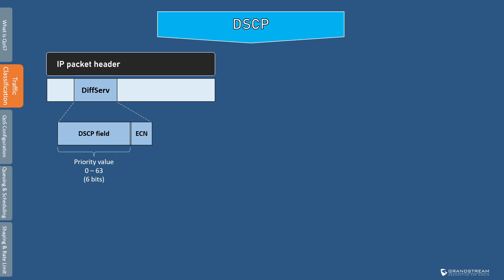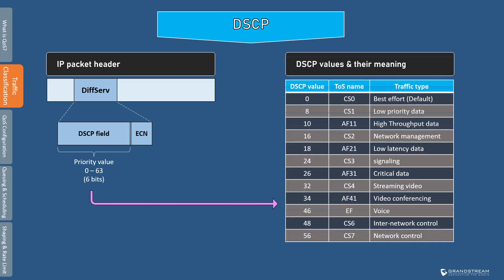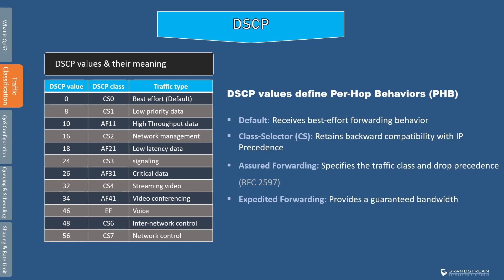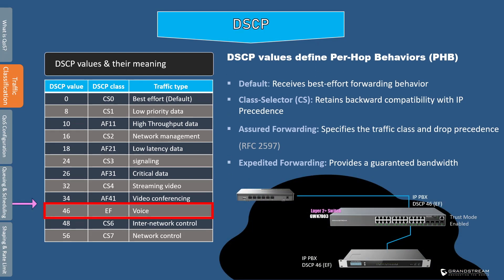Every packet includes a DSCP field which is made up of six bits in the IP header. The six bits of the DS field are used to select the per-hop behavior. There are four types of forwarding behaviors defined by DSCP. The default behavior operates on a best-effort delivery basis, which means that all traffic has equal priority and equal chance of being dropped during network congestion. The DSCP field is backward compatible with the legacy IP precedence, and class selector is used to retain backward compatibility with legacy routers. Assured forwarding specifies the traffic class and drop precedence. Expedited forwarding behavior guarantees the available bandwidth for applications and devices that require low delay, and should be assigned to only critical traffic sensitive to delay, such as an IP PBX or an IP phone.